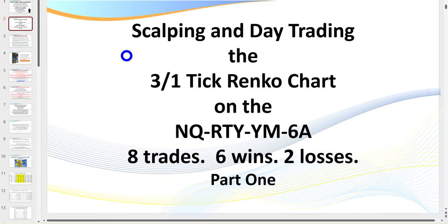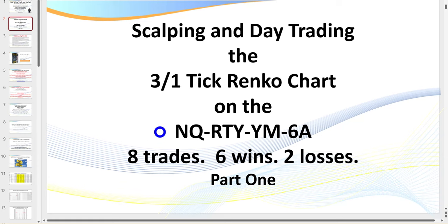Today we're covering the 3-1 tick Renko chart. A 3-tick Renko chart has a height from high to low of 3 ticks, or $15 in this case, offset by 1. What I'm about to show you can be applied to the NQ, the Russell, the YM, and the currency futures market such as the 6A — all $5 a tick. So you can apply the exact same philosophy and money management rules. I had eight trades — six wins and two losses, one of which was a silly loss.